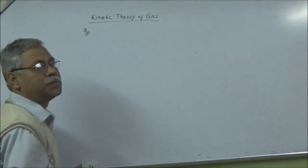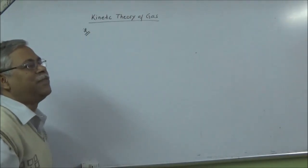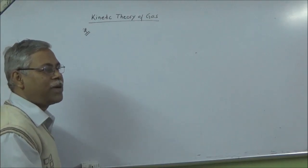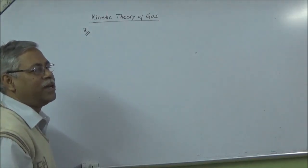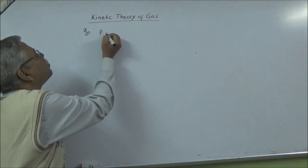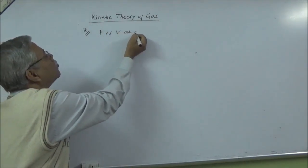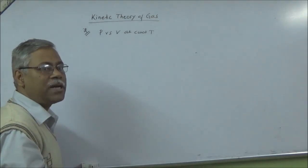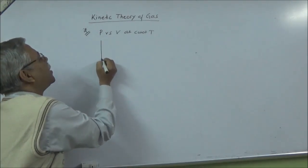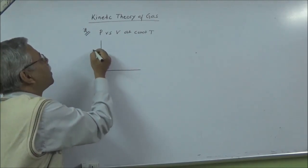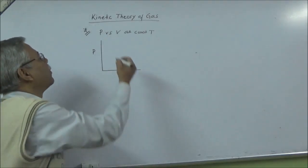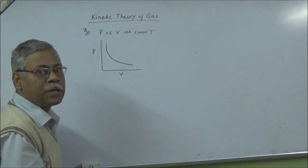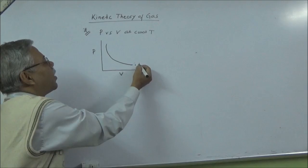Next, draw P versus V at constant temperature for real gas and for ideal gas. For an ideal gas, you know this graph — it is the Boyle's law graph, which is a very important graph.